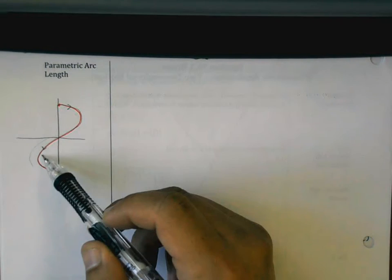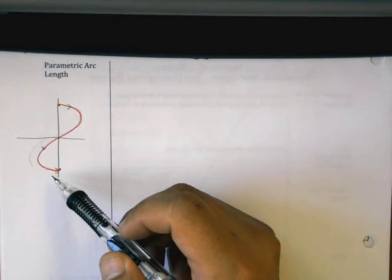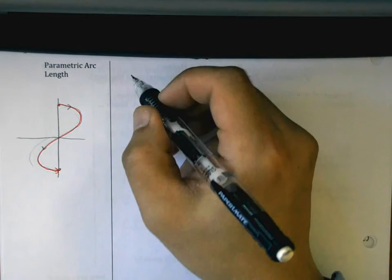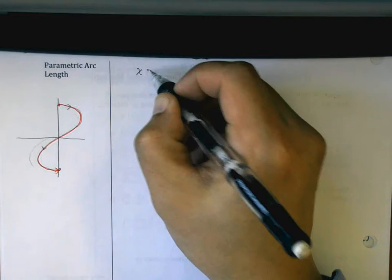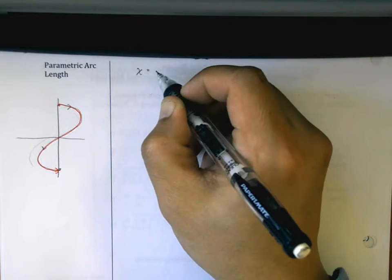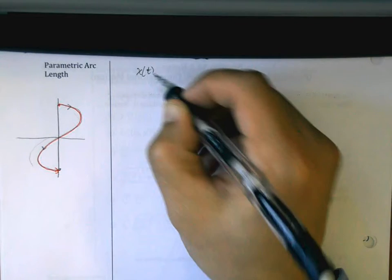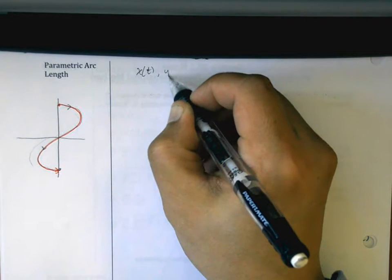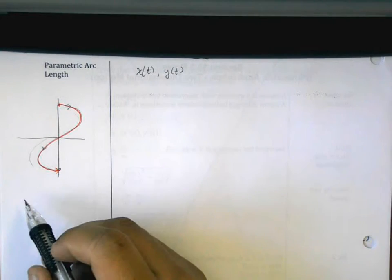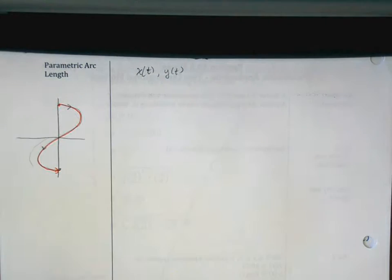Now, what makes this problem a little bit more difficult is that this curve here is not a function, at least not in terms of x and y. It's actually the combination of two functions where x is equal to x of t and y of t, right? This curve here is made up of two parametric equations.